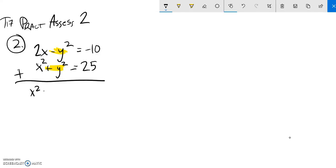X squared plus 2x, that's x squared plus 2x. Y squareds cancel. Negative 10 plus 25, that's 15. So now I have a quadratic to solve.